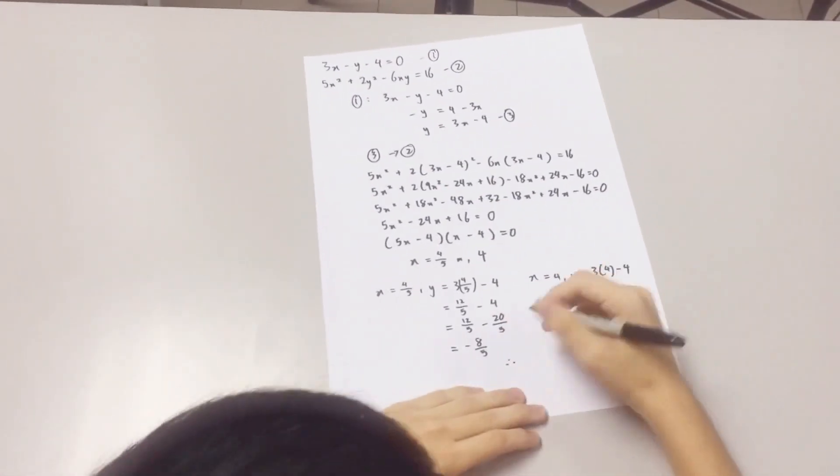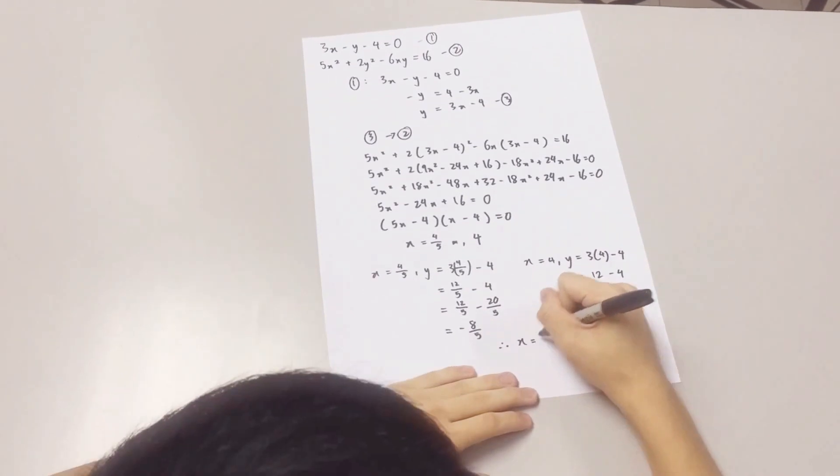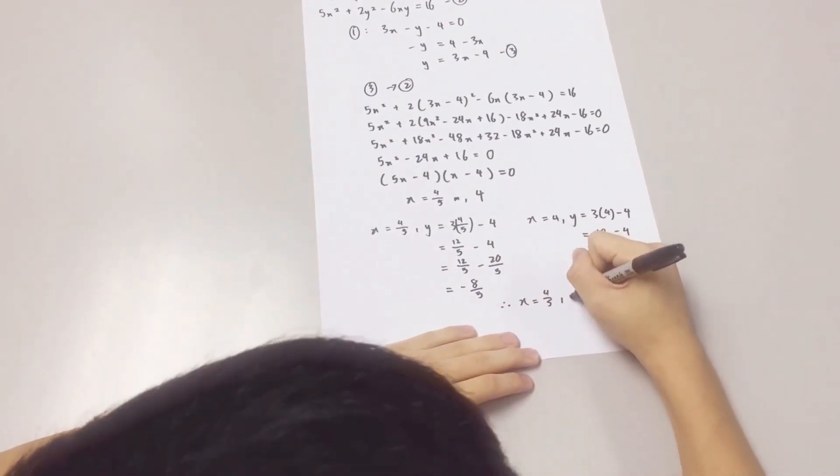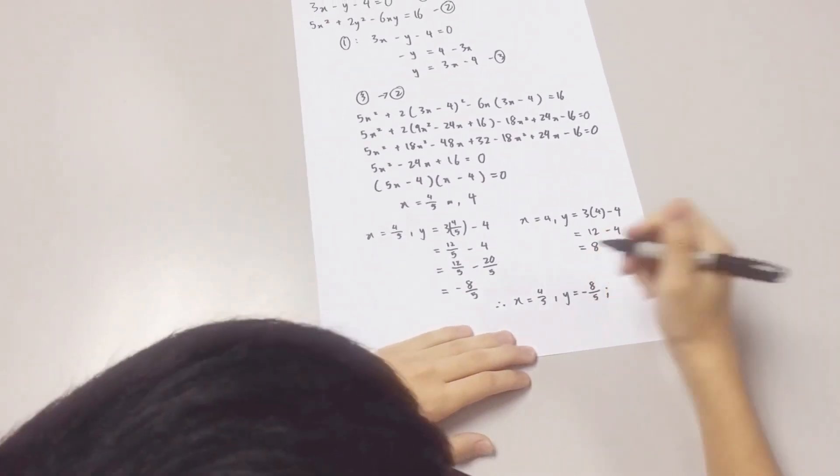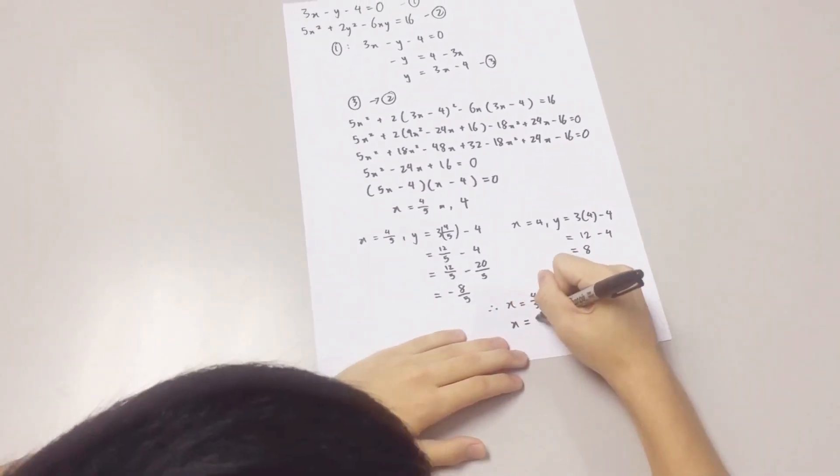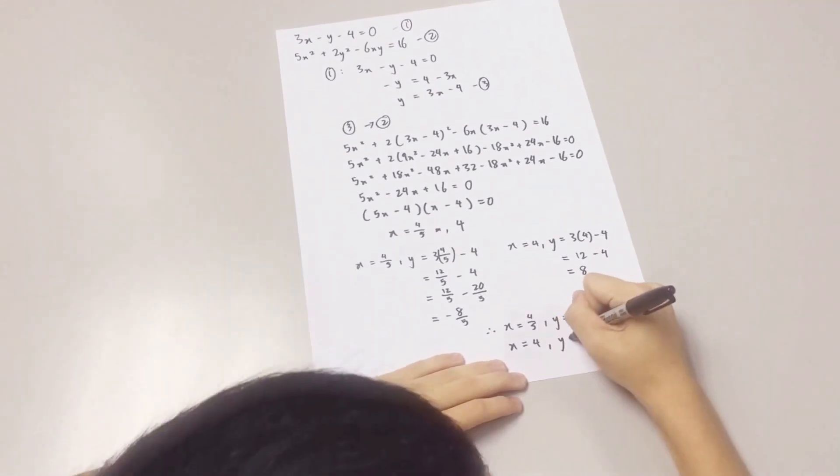Therefore, when x equals to 4 over 5, y equals to negative 8 over 5. And when x equals to 4, y equals to 8.